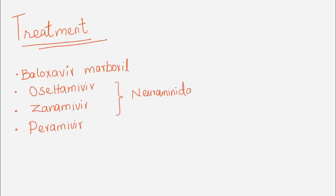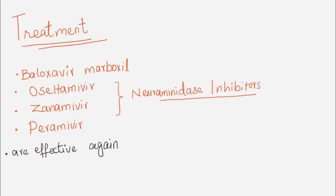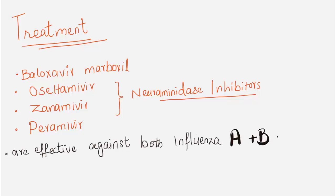Oseltamivir, zanamivir, and peramivir are neuraminidase inhibitors. These drugs are effective against both Influenza A and B viruses.